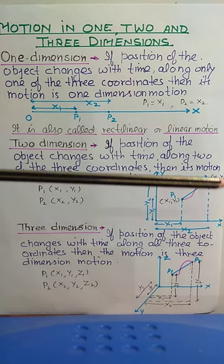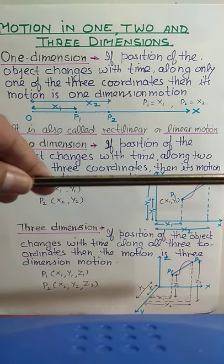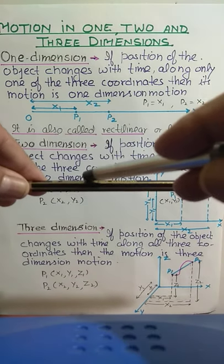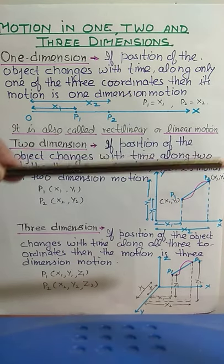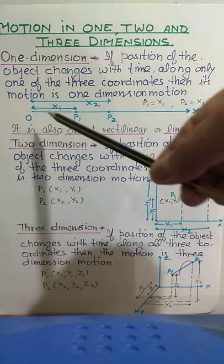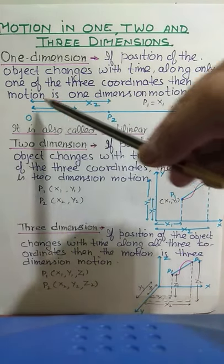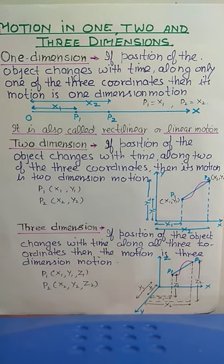For one-dimensional motion: along any one axis — x, y, or z — if the object's displacement goes from one point to another along that single axis, then this is one-dimensional motion. Therefore, if the position of an object changes with time along only one of the three coordinates, then its motion is one-dimensional motion. For example, on a line with origin O, the object moves from position x1 to x2 — this motion is along one dimension.